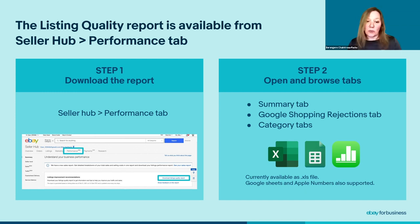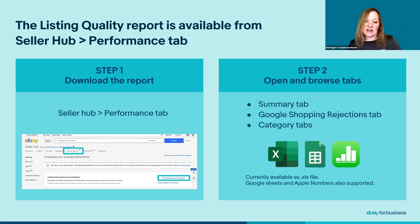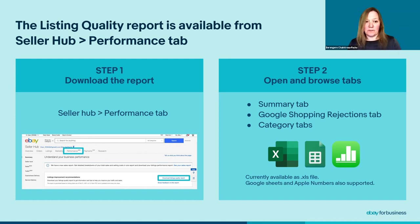Once opened, you will find several tabs within the report: a Summary tab, a Google Shopping Rejections tab, and separate tabs for each listing category — up to 10 of them. Let's go straight to the Summary tab.